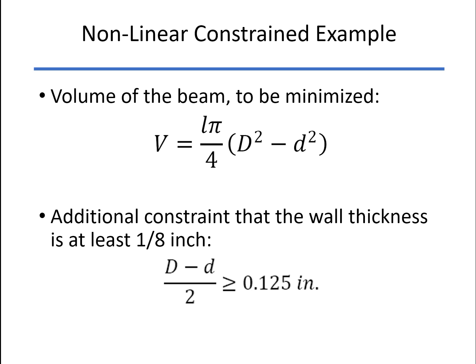We want to minimize the amount of steel that we use, both from a cost and weight standpoint. So there's the equation for the volume of the beam, and we have one other constraint.